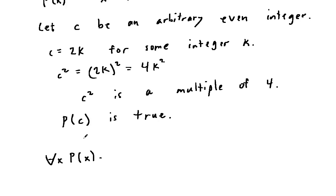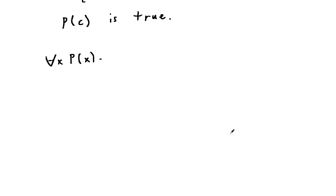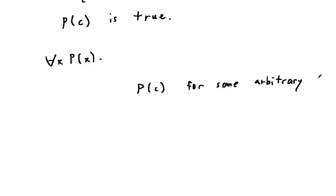The rule of inference just illustrated has the following form: p of c for some arbitrary c, therefore for every x, p of x. This is called universal generalization.